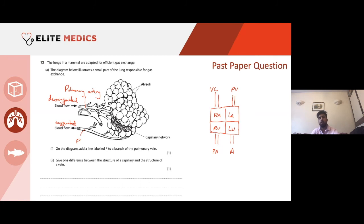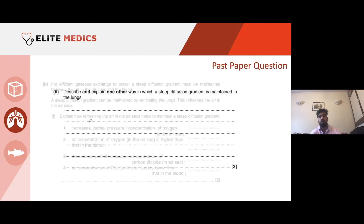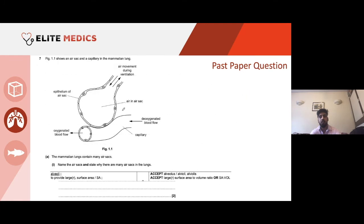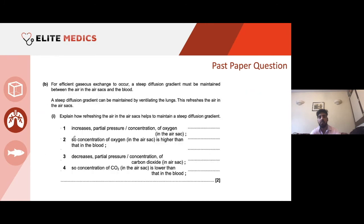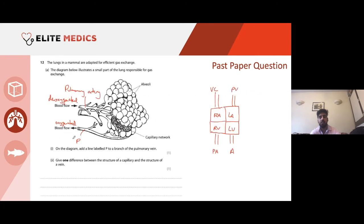Give one difference between the structure of a capillary and a vein. A capillary wall is one cell thick while a vein wall is thicker. Capillaries have no collagen for structural support whereas veins do. Capillaries don't have valves, but veins do. Capillaries have a smaller lumen than veins. The most obvious answers are: capillaries don't have valves, and the capillary wall is only one cell thick.